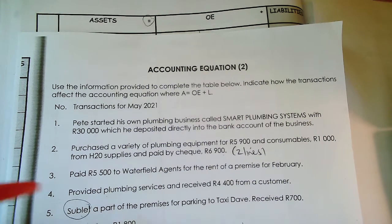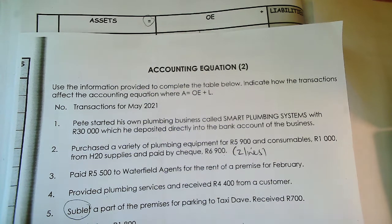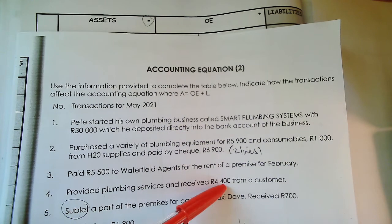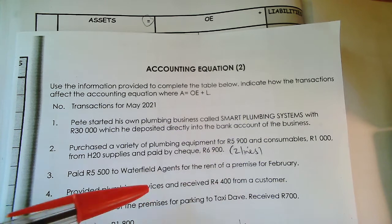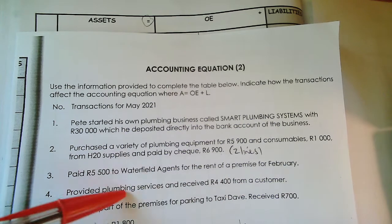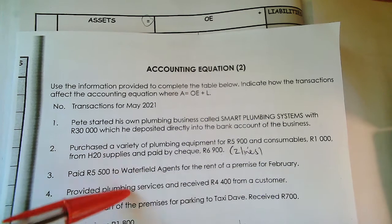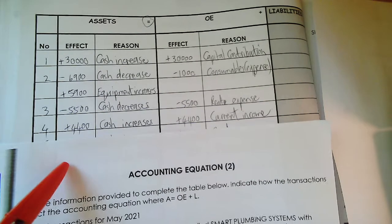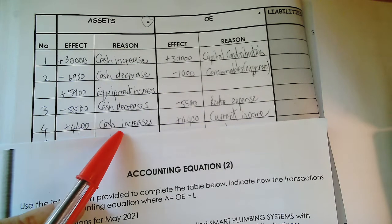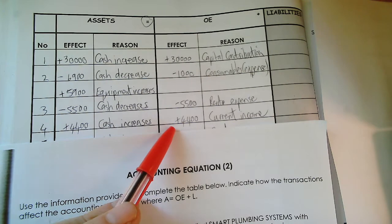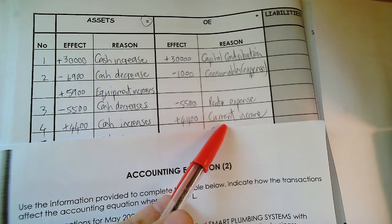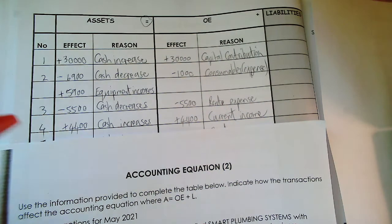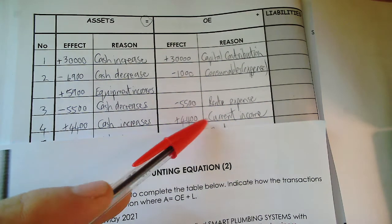Number four: provided plumbing services and received R4,400 from a customer. I am receiving money, so bank increases with R4,400. When you render any service it will be called current income. Looking at the answer: plus R4,400 cash increases, and plus R4,400 current income — income is an owners' equity account — so plus R4,400 equals plus R4,400.